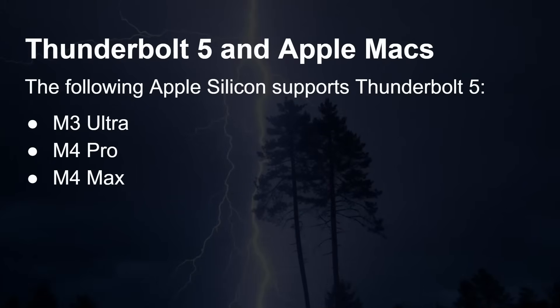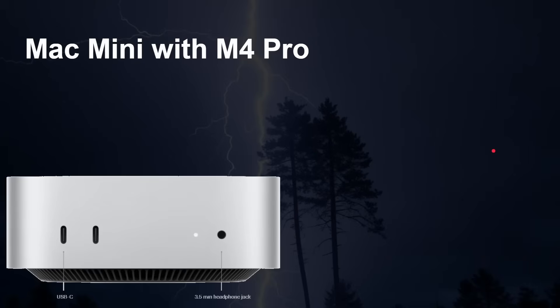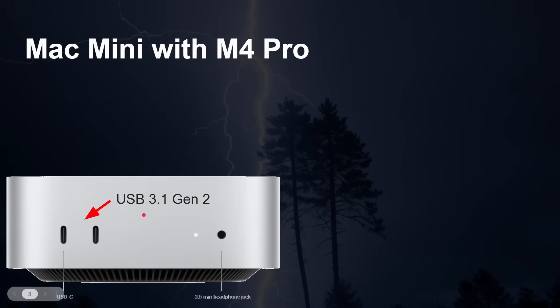So where are we with Apple Silicon and Thunderbolt 5? The chips that support it are the M3 Ultra, the M4 Pro, and the M4 Max. Looking at the Mac Mini with the M4 Pro, on the front it has USB-C ports that are actually USB 3.1 Gen 2, while at the back you get three Thunderbolt 5 ports. If you buy a Mac Mini with the M4 Pro, do note the difference between the front and back ports — they all use USB Type-C connectors but with different capabilities.